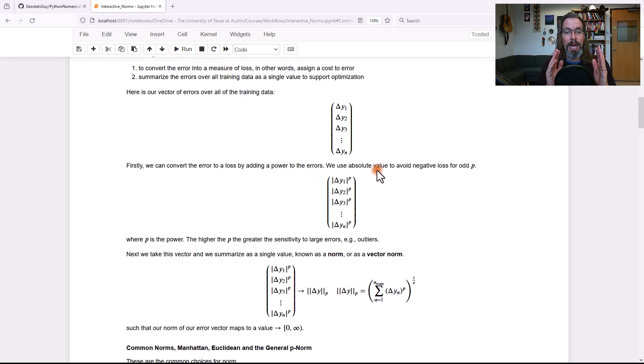That's a pretty natural way to think about loss. It's general. And so absolute values, we avoid negative loss if we have like a p equals 1 or 3. An odd loss could have negative loss if you have negative error.